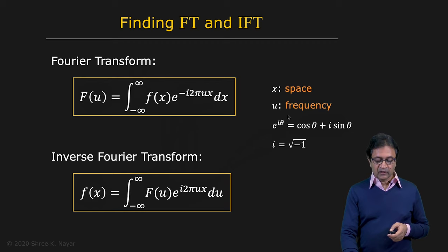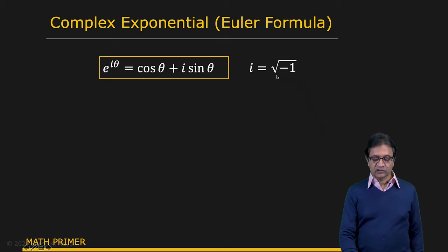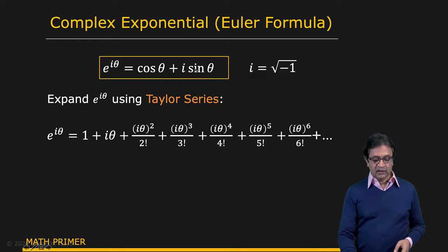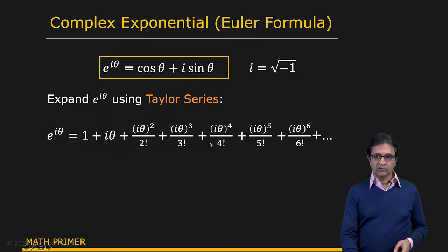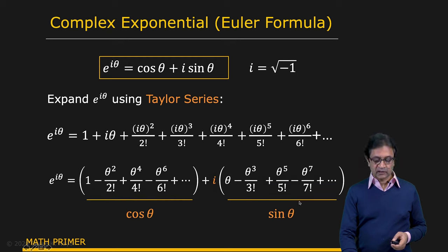Let's look at why e^(iθ) = cosθ + i·sinθ, where i is the square root of −1. We expand the complex exponential using the Taylor series — we know the Taylor series of e to the power of anything. We then separate out the terms with even powers and the terms with odd powers, where the odd-power terms have i on the outside. The even-power series is the Taylor series expansion of cosθ, and the odd-power series is the Taylor series expansion of sinθ. Therefore, e^(iθ) = cosθ + i·sinθ.